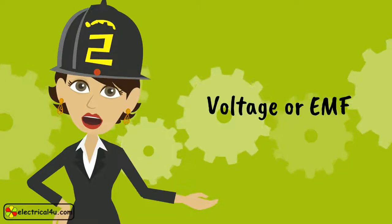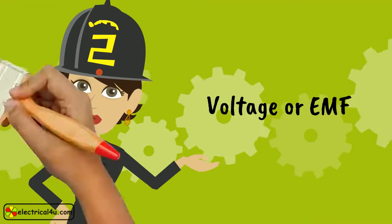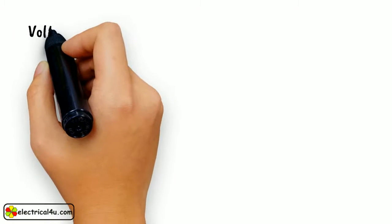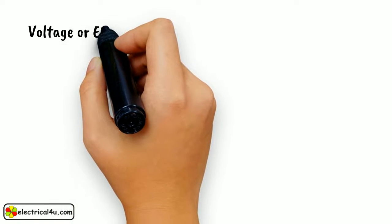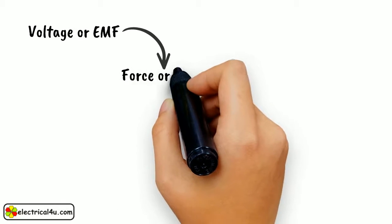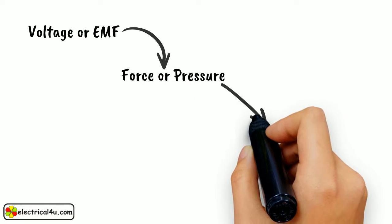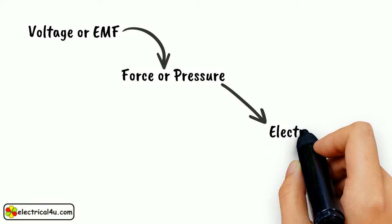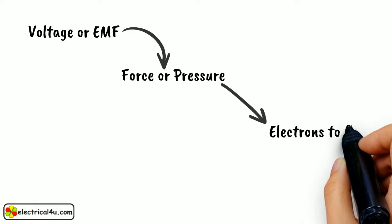Let us discuss voltage or EMF. Voltage or EMF produces a force or pressure that causes the free electrons in a body to move in a particular direction.